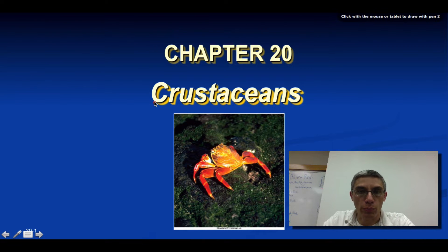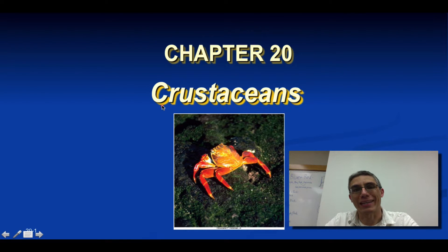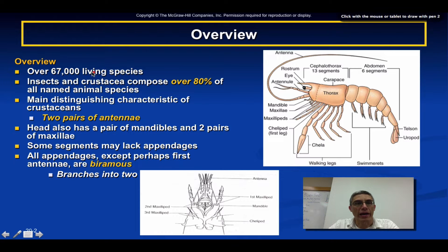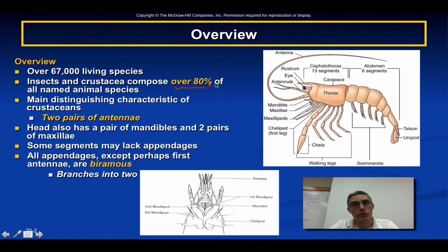We're still talking about arthropods, but we're going to be talking about the class Crustacea. When you talk about crustaceans, we're talking about a pretty large group — there are over 67,000 living species discovered up to this point. When you take the crustaceans and combine them with the insects, they actually compose over 80% of all named animal species on this planet, and that's a pretty big number.